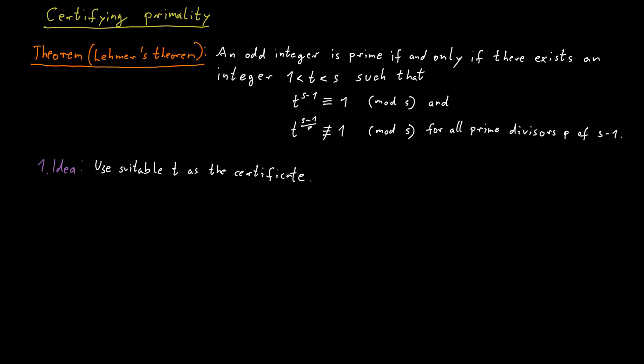But we run into problems once we think about the second condition: t to the power of (s minus 1) divided by p should not be congruent to 1 modulo s, for all prime divisors p of s minus 1. The question is how can we check that efficiently? In particular, this would require the verifier to know all the prime divisors p of s minus 1, which seems difficult if we don't know the prime factorization of s minus 1.